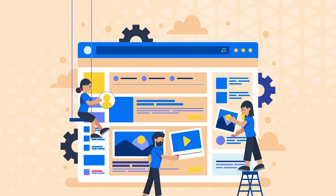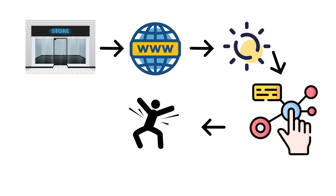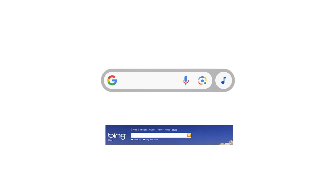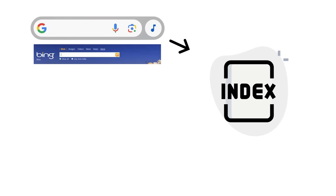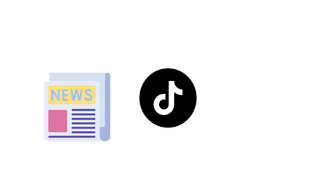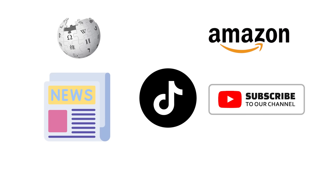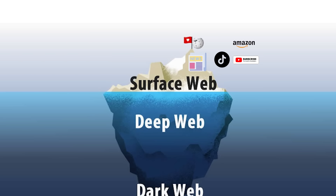Everything here is built to be seen. It's the glossy storefront of the internet — bright, interactive, full of motion. Search engines like Google and Bing crawl through it endlessly, indexing billions of pages so you can find whatever you want with a few keystrokes. News articles, TikTok clips, YouTube channels, Wikipedia, Amazon — all of it lives here, floating on the calm surface of the network ocean.